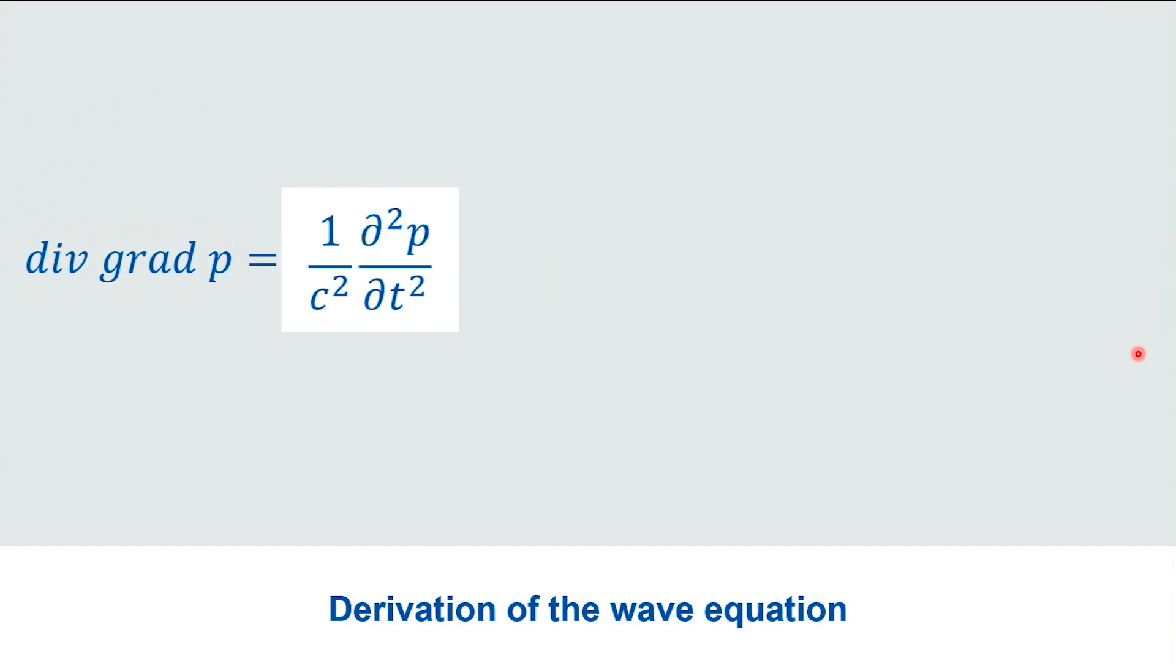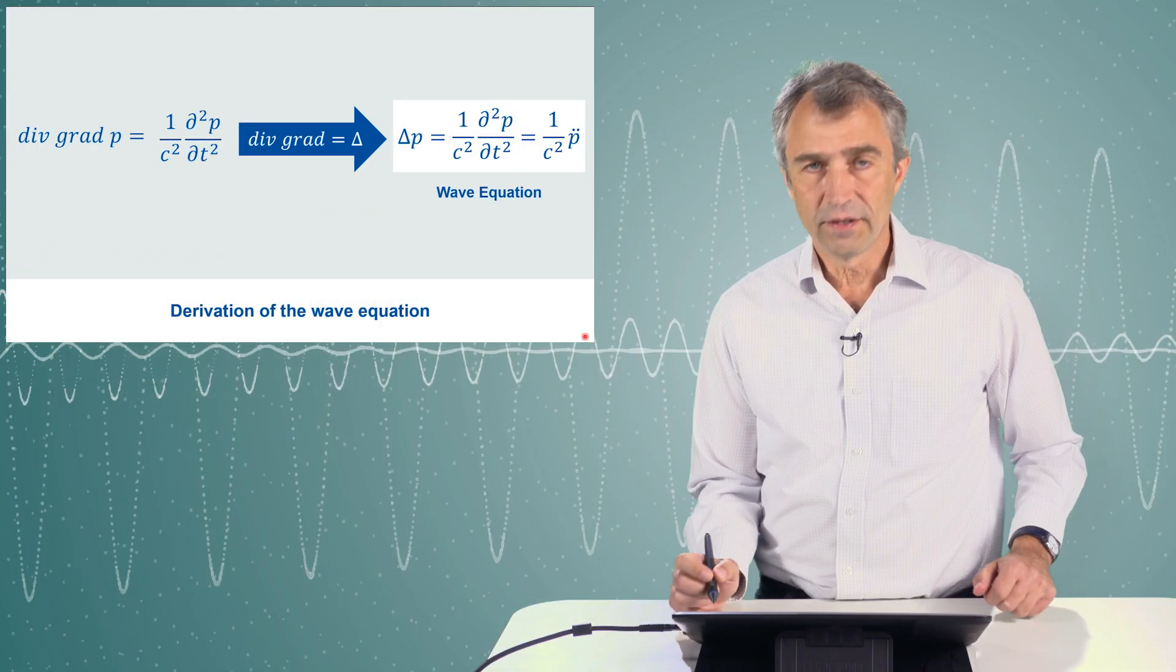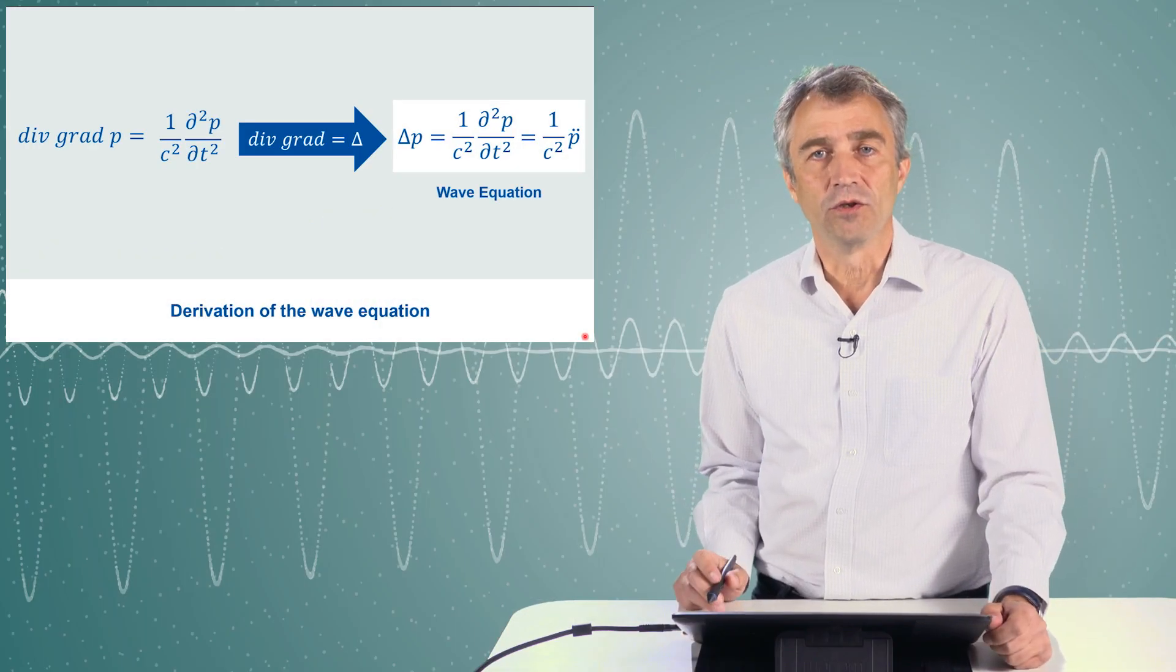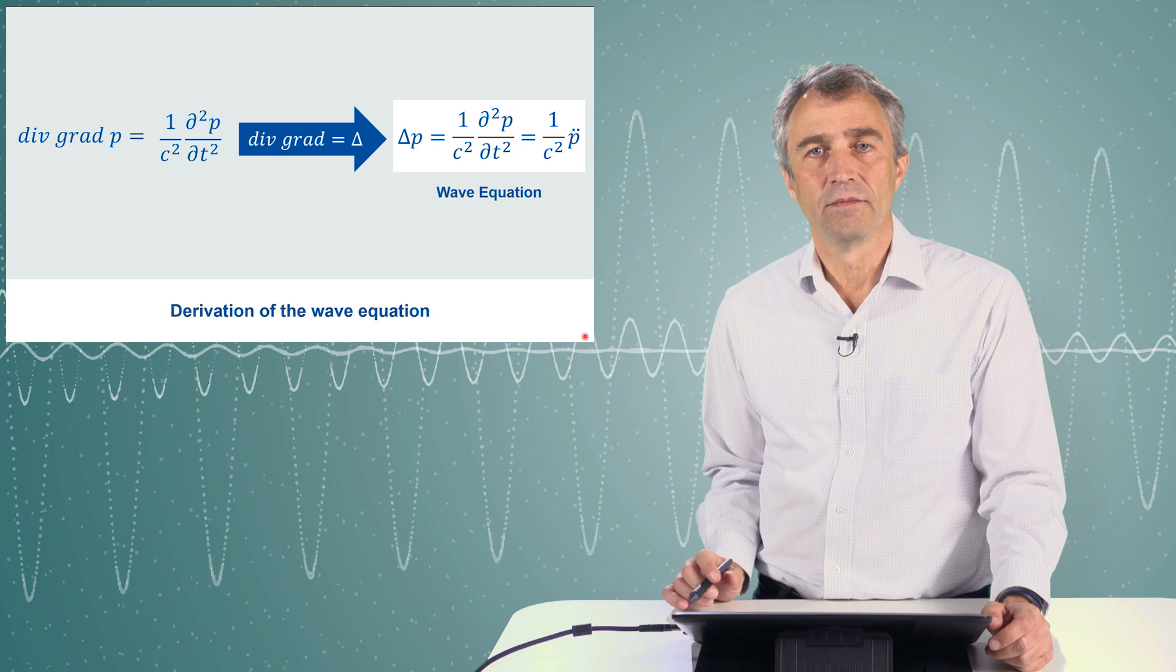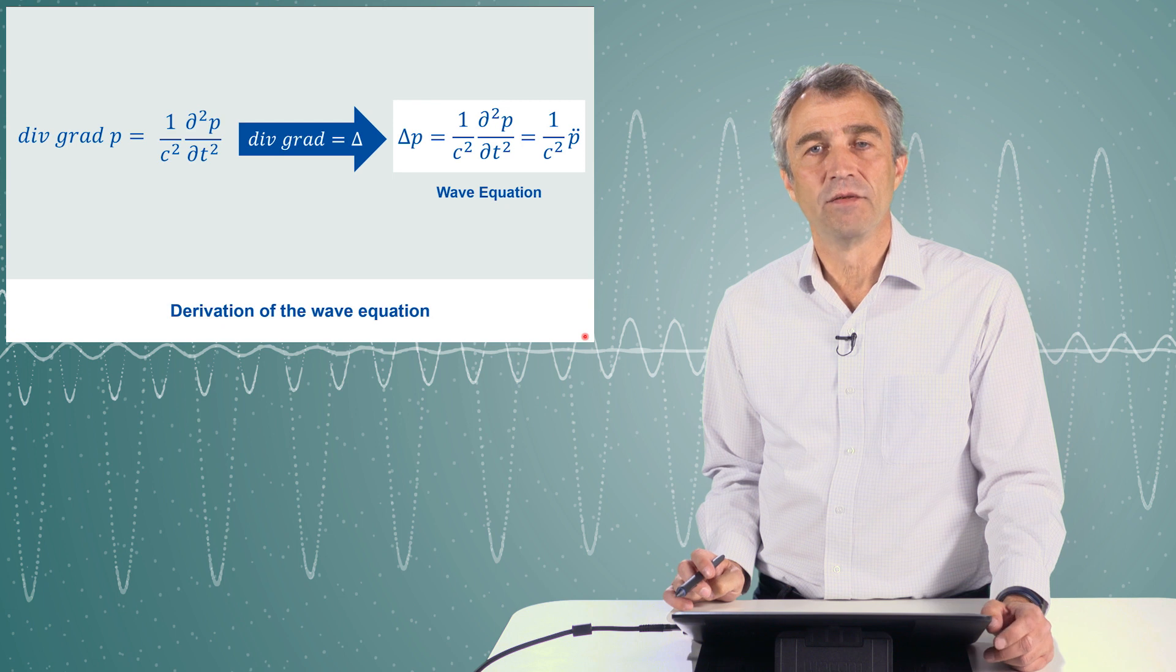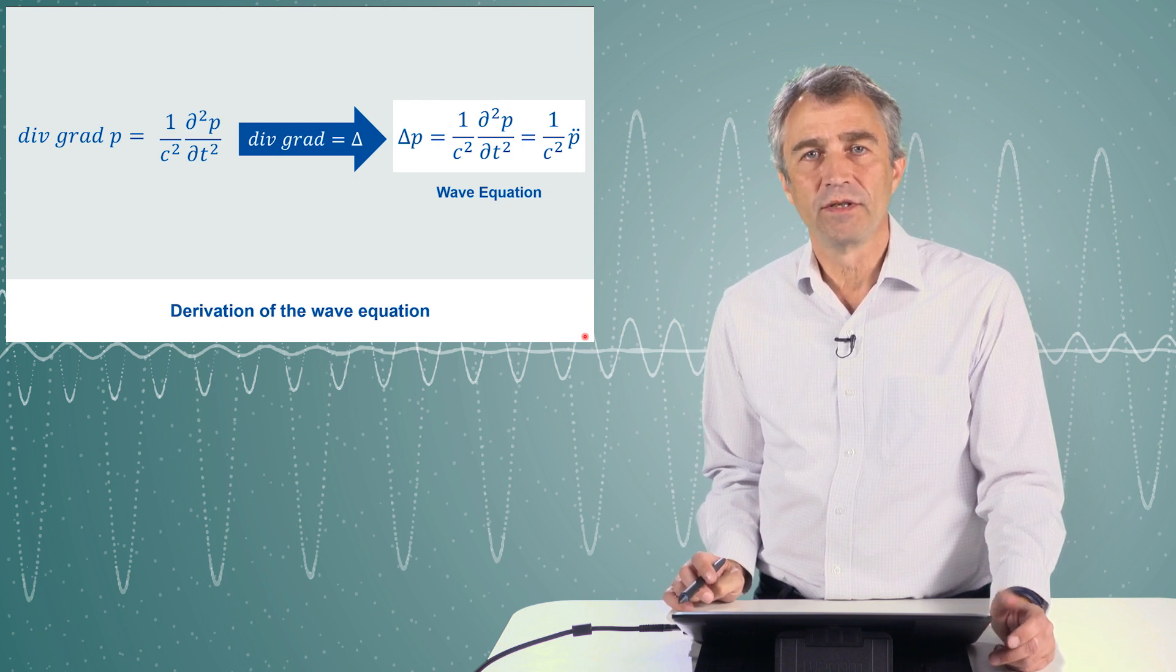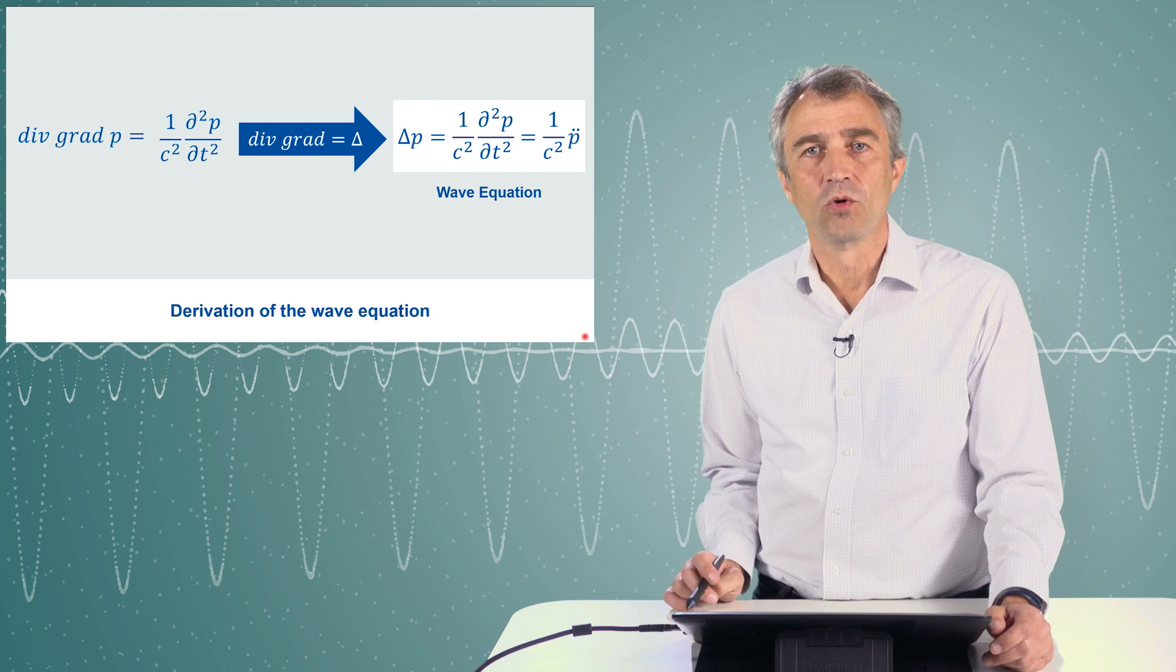This concludes our lecture of today. This is the wave equation. In more general form we can express this in the Laplace operator form. And the compact notation is delta p is 1 over c-square times p double dot. This equation is called the wave equation. It connects the time derivative of the pressure with the space derivative of the pressure and involved is the constant c. In the next lecture we will solve this equation and we will see what waves are about.